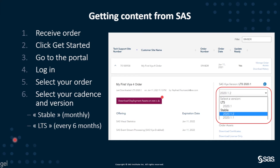One of the main differences is that with the monthly release, you will get new features as soon as they are available. However, the duration of support will be shorter and you will be expected to update very regularly. Whereas with the LTS cadence, you will be on a longer-term support — supported for about two years from when you install the latest version — but you will not get new features as quickly as with the monthly cadence.